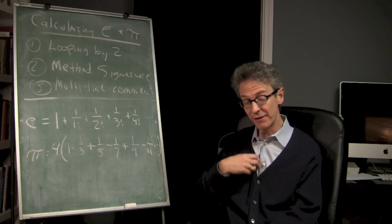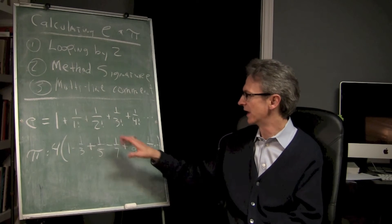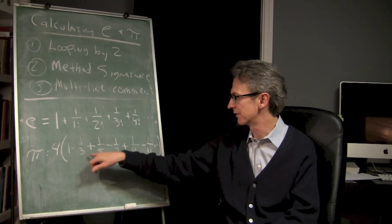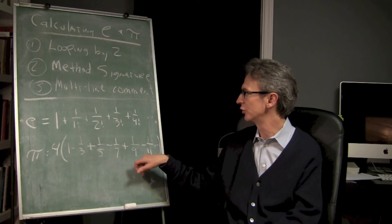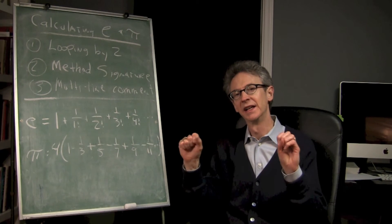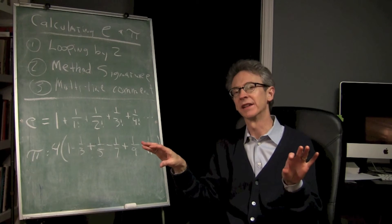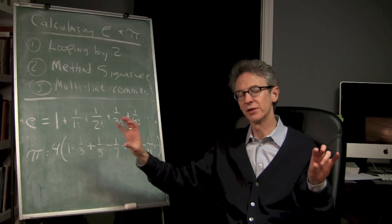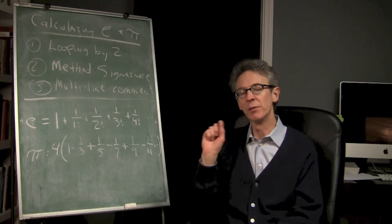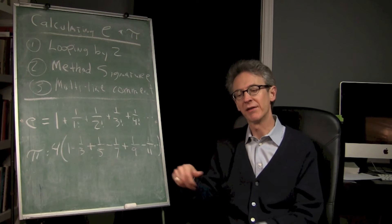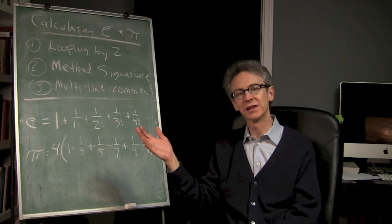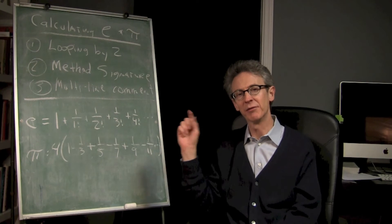So I thought this would be kind of fun. These are running totals, these are loops. We'll actually learn to loop by 2 - you can see 3, 5, 7, 9, 11. We'll also learn this concept of a method signature, which is basically the header - what the method should return, what it takes. And the notion of a multi-line comment, so how you might have a whole paragraph of comments and what those typically look like in Java.